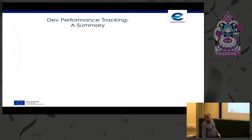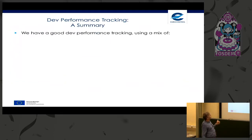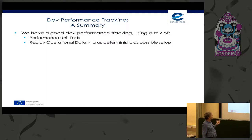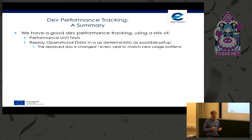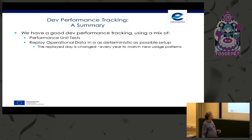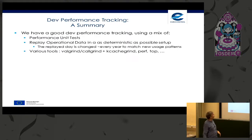Performance tracking — a summary. We have good development performance tracking using a mix of performance unit tests and replaying operational data as deterministically as possible. We change the replay reference day relatively frequently so it reflects new usage patterns — new companies, restricted airspace, new routes. We use various tools: Valgrind, Callgrind, KCachegrind, perf, top, and so on. We have to take care about blind spots. For example, Callgrind/KCachegrind is very easy to use and is our main optimization tool, but it is very slow, serializes multithreaded applications, and never shows contention.